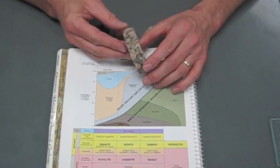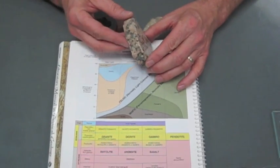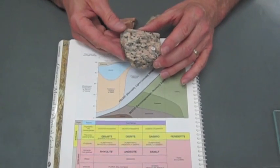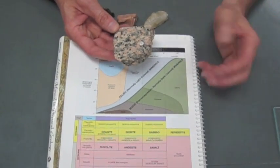This is the igneous rock granite. You can see it has large visible crystals that sometimes flash in the light, telling you they're visible to your eye.